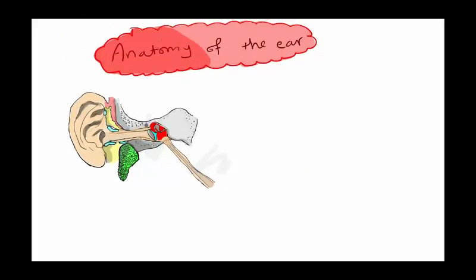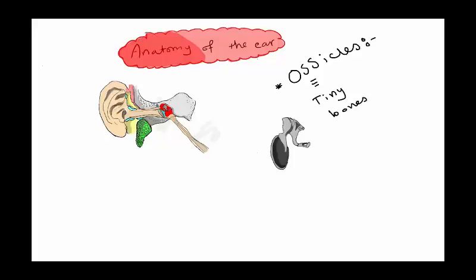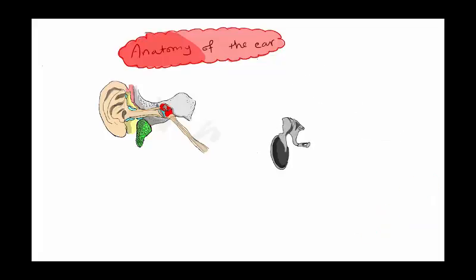That covers the tympanic membrane. Now we will go through the ossicles. The word ossicle means tiny bone. The ossicles are the smallest bones in the body. There are three: malleus, incus, and stapes. The stapes is attached to the oval window. The function of the ossicles is to transmit vibrations from the tympanic membrane to the oval window and to the structures of the inner ear.